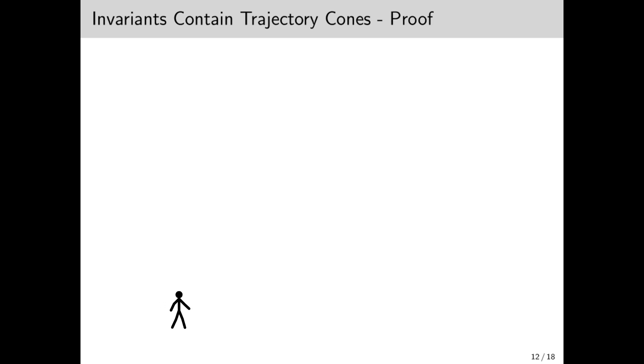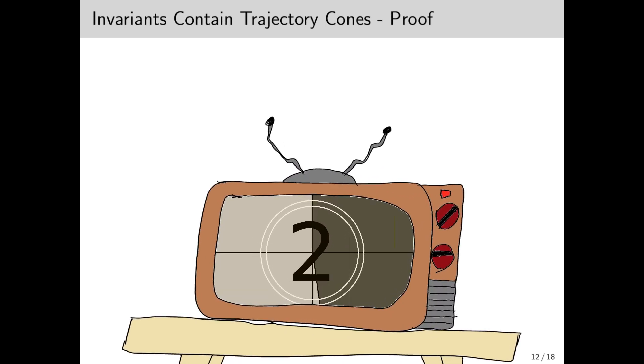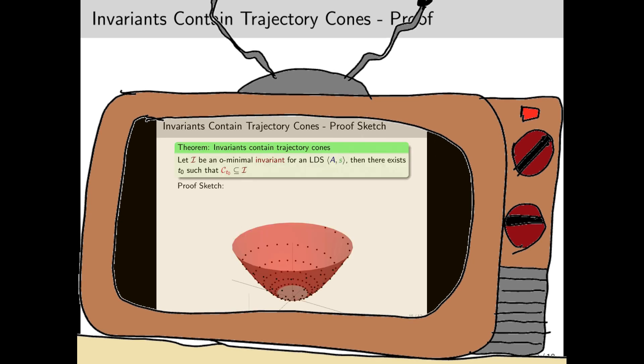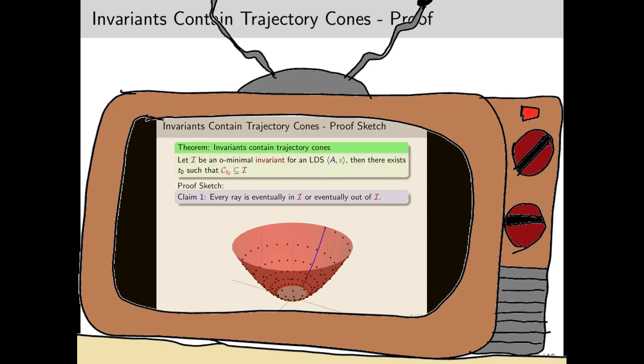In order to prove that every invariant contains C_{t₀}, sorry, let me just bring my TV here... Here we go. I'd like to take you on a stroll down memory lane, back to ICALP 2018, where we studied a similar notion for discrete linear dynamical systems. Here we actually proved the similar characterization works in a discrete setting. The proof of the continuous setting is pretty much identical.